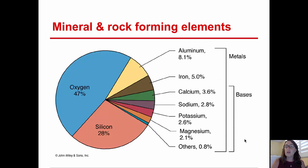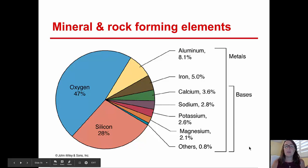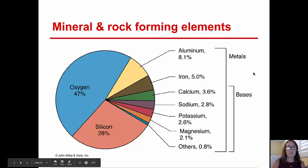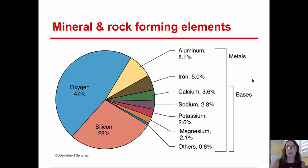First of all, we know that the Earth's crust is made of only eight elements primarily, and that 0.8% of the crust is made up of all the other elements. You can see in this pie chart here that the two primary elements found in all of the rocks in Earth's crust are oxygen and silicon, and together they make up over 70%. The others are aluminum, iron, calcium, sodium, potassium, and magnesium. Together, those eight elements make up the great majority of the rock-forming minerals in Earth's crust.